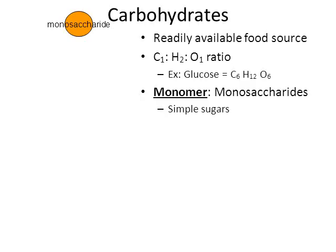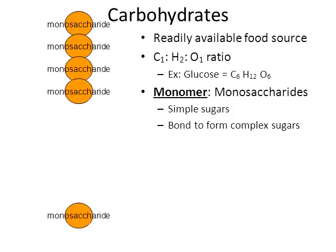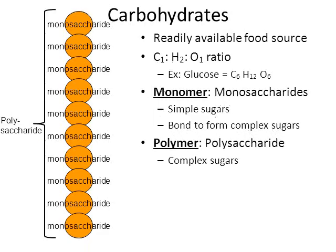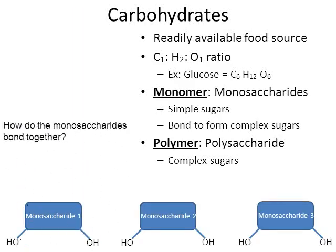Simple sugars can form larger complex sugars. The scientific name for a simple sugar is a monosaccharide. When monosaccharides bond together one after another, you get a larger structure called a polysaccharide. A complex sugar is the same thing as a polysaccharide — polysaccharide is just the scientific term for a complex sugar.